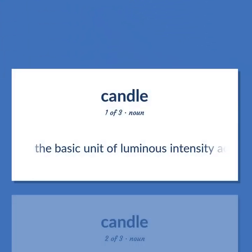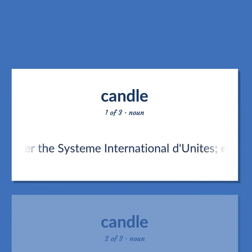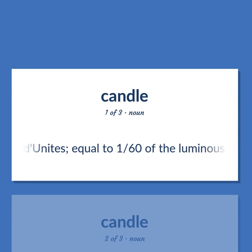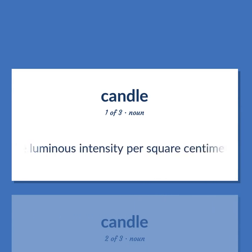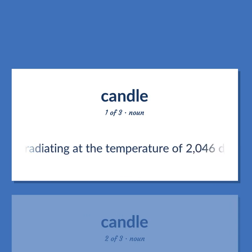The basic unit of luminous intensity adopted under the International System of Units. Equal to 1/60th of the luminous intensity per square centimeter of a black body radiating at the temperature of 2046 degrees Kelvin.